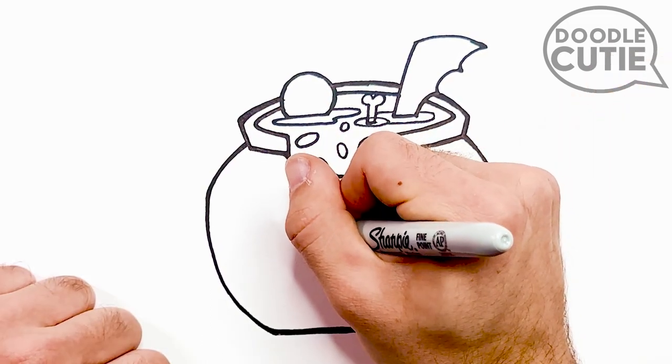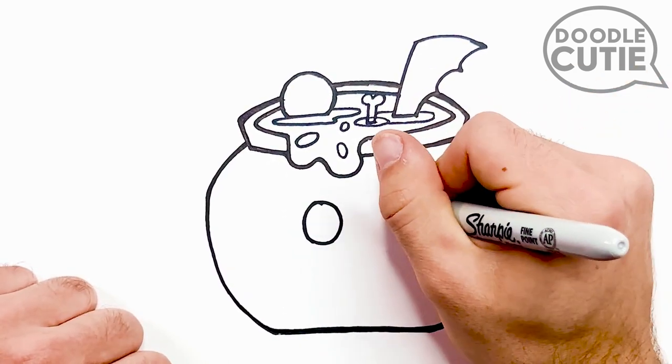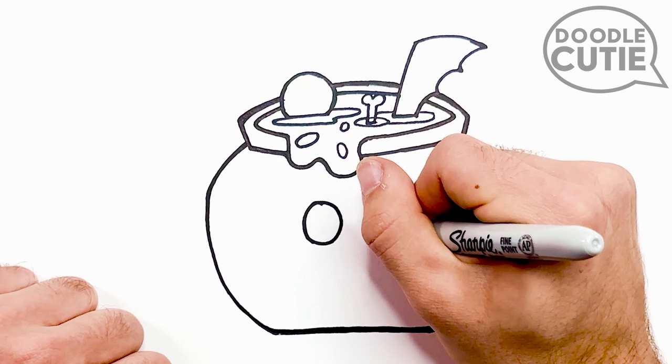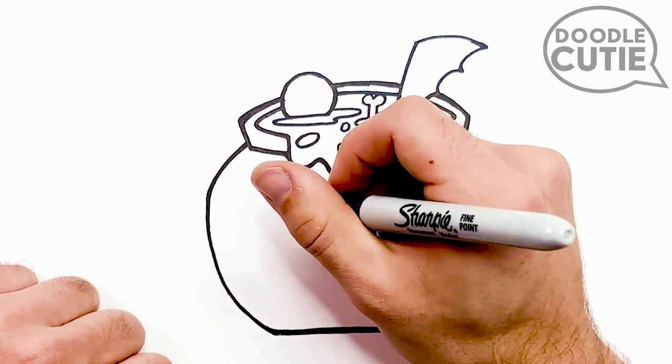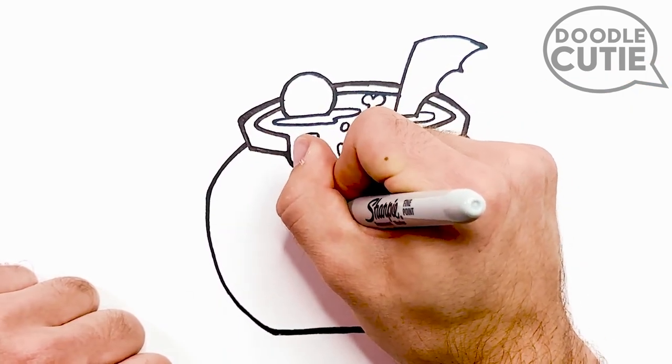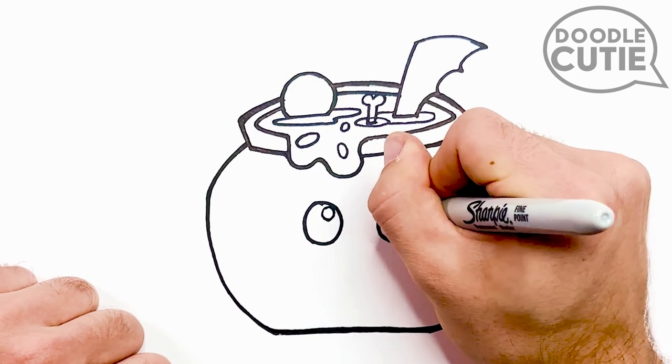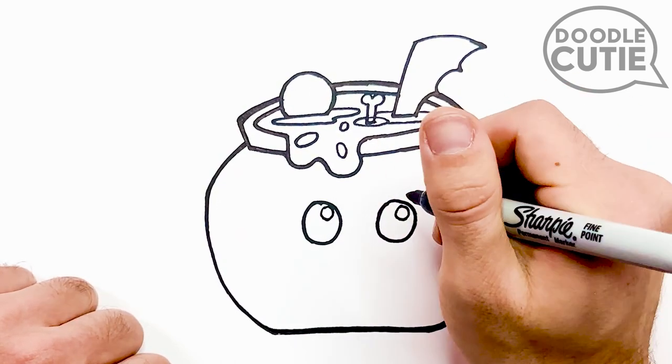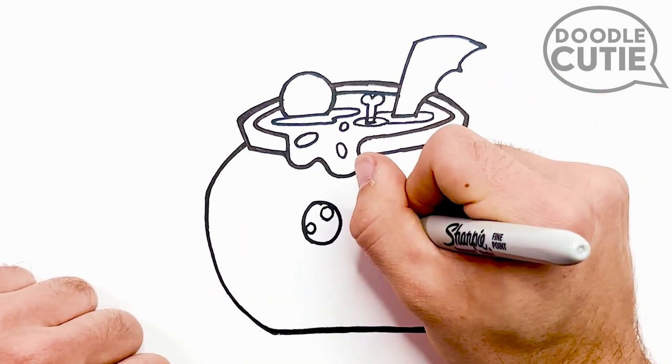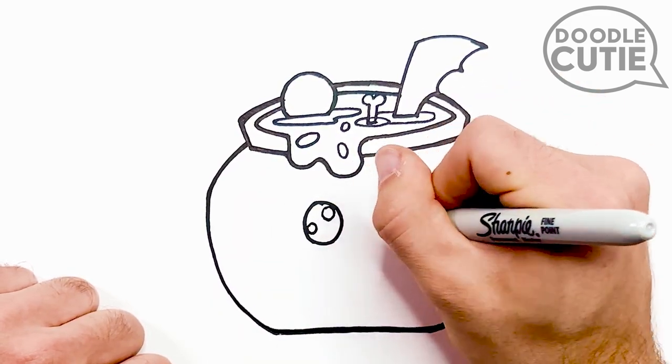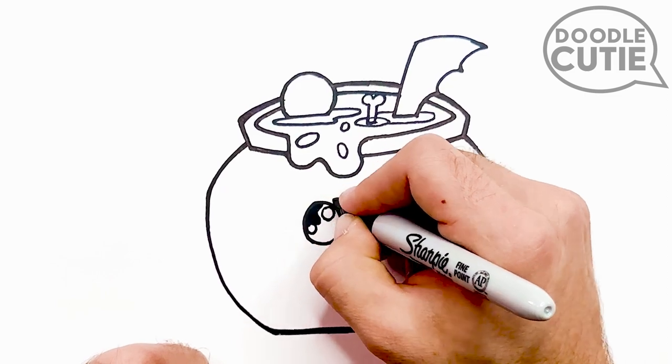Then we get to do my favorite part, the eyes. So we'll start the left eye right here. Then we'll go over about another eye's width and draw the right eye. Then I'll go into my eyes and on the top right, I'll draw a little circle on each eye. And then on the bottom left of this big circle, I'll draw another one. Like that. Same for my right eye. Then I'll go in and fill in that bigger circle with my marker.